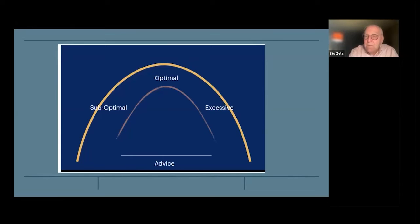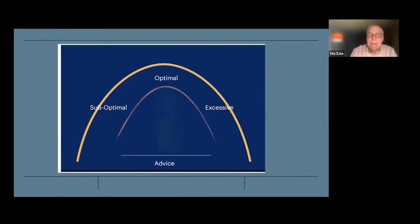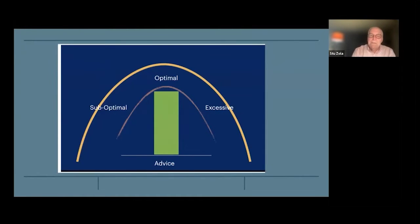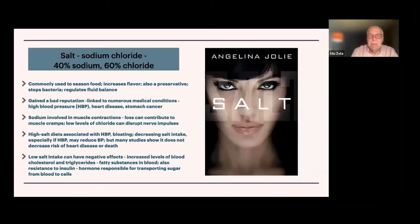That's the idea of this inverted U-shaped curve. For all kinds of things — whether it's alcohol, sugar, or salt we intake — those things can all fit on this kind of curve. There'll be some optimal levels, suboptimal levels, and in some cases harmful levels over on the right-hand side. That's the general framework we'll take throughout this session.